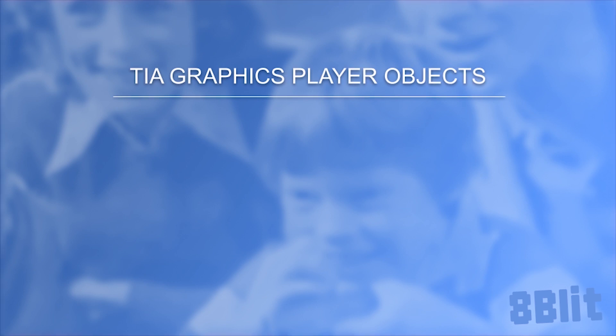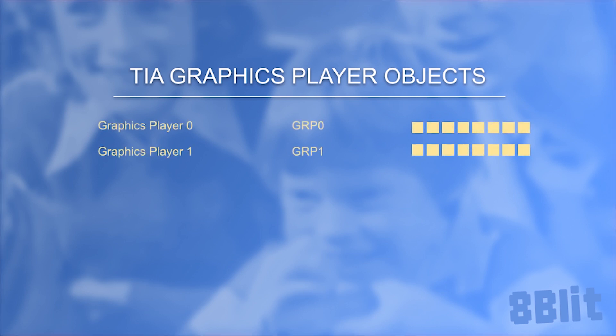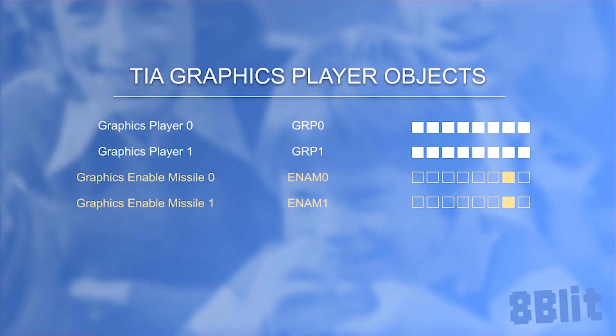The Television Interface Adapter, or TIA, on the Atari VCS provides us with the following hardware graphics registers for our sprites. The largest of them are Graphics Player 0 and Graphics Player 1. Each of these registers is 1 byte, or 8 bits wide, with each bit representing a single pixel that is either visible or hidden. The other three graphics objects are even more limited, coming in at only a single bit per register — Graphics Enable Missile 0 and 1, and the Graphics Enable Ball register.